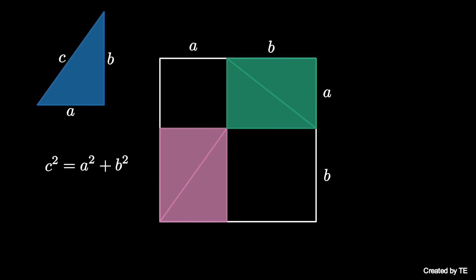Consequently, we have seen that c squared must be equal to a squared plus b squared. This is the Pythagorean theorem.